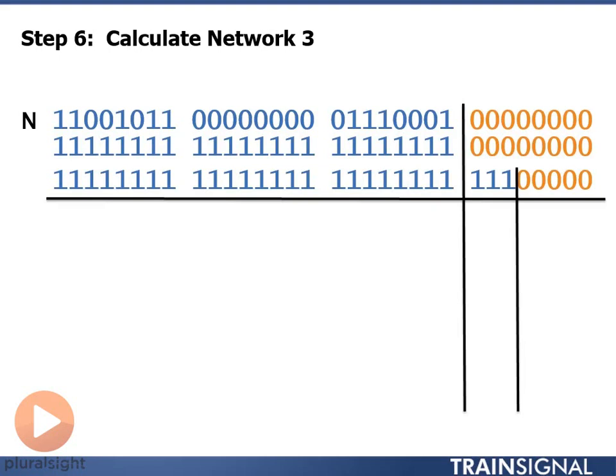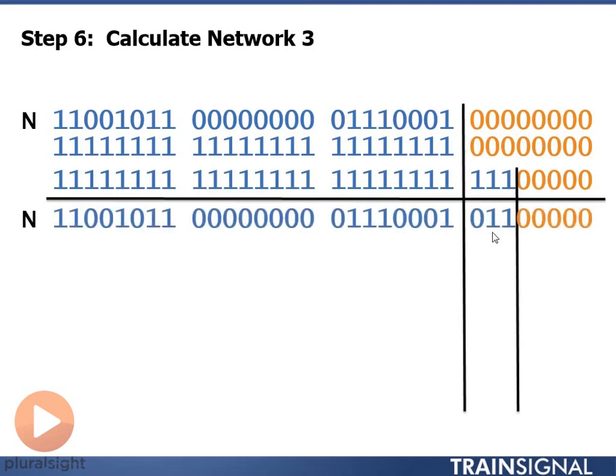Let's calculate network number 3. To calculate network number 3, I convert 3 to binary, make it so that it can fit into 3 bits, and fill in my borrowed bit section.